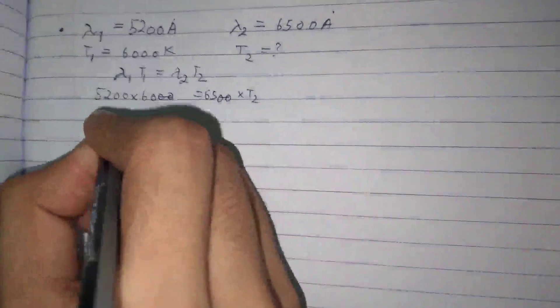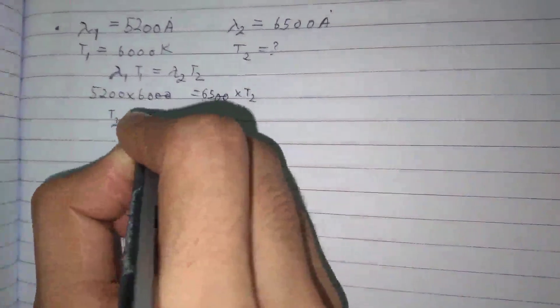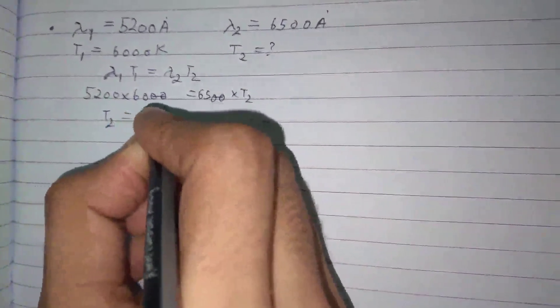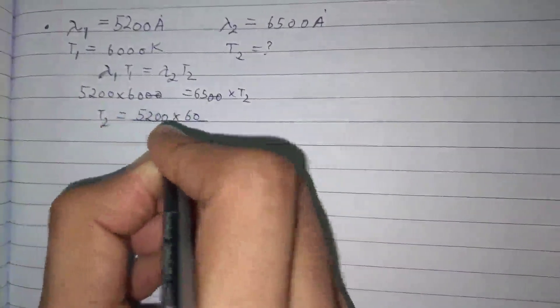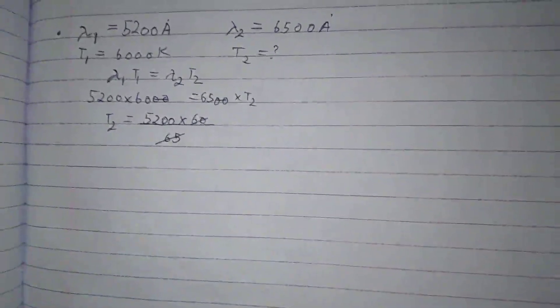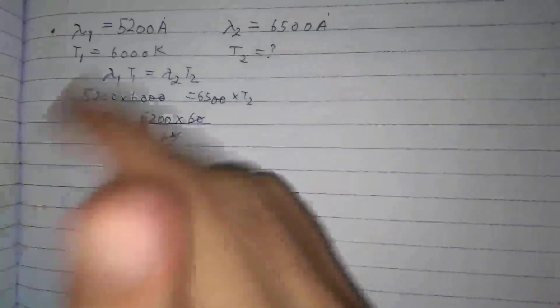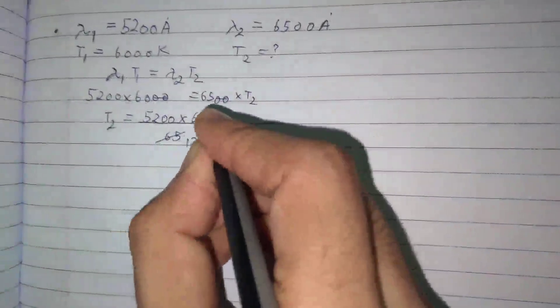Toh 20 se 20 cancel. Toh T2 kitna ho jayega? 5200 into 60 divided by 65. Toh hamara yeh 12 se gaya, 35 se divide karun toh yeh 13 aa jayega aur yeh aa jayega 12.